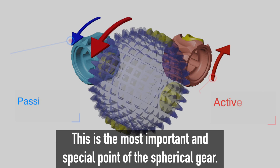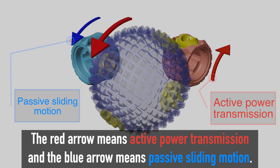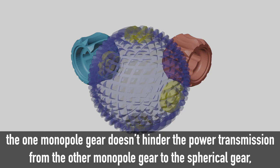This is the most important and special point of the spherical gear. The red arrow means active power transmission and the blue arrow means passive sliding motion.